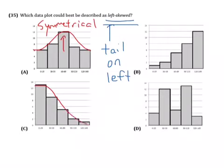Choice C, its tail is over here where it goes down on the right side. So, this is right skewed.